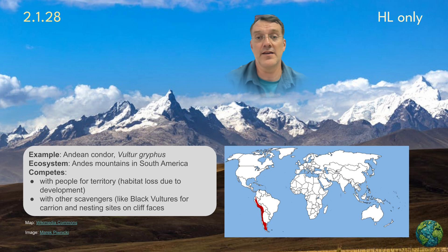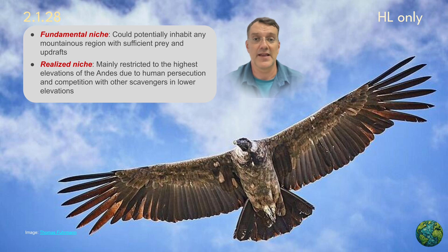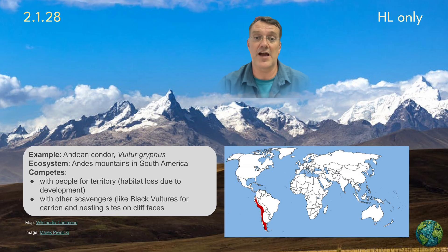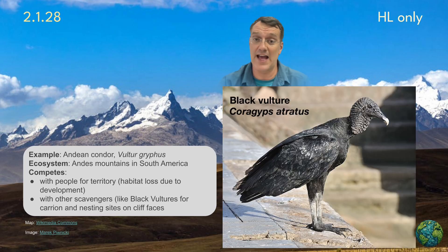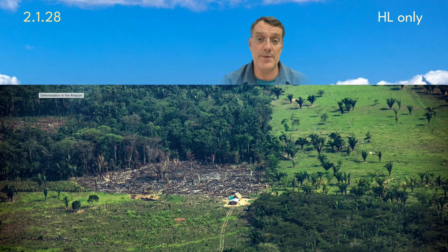Example four is the Andean condor, Vultur gryphus, which presents an interesting case. Its fundamental niche includes any mountainous region with sufficient updrafts and food. However, its realized niche is much smaller — it's restricted to the highest parts of the Andes mountains. This is due primarily to competition with other scavengers like the black vulture, which it competes with for carrion and nesting sites. But the Andean condor also competes with people, mainly through habitat loss and persecution — meaning people hunt it.